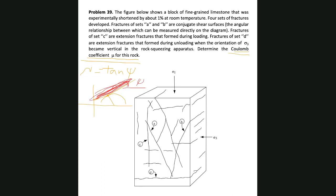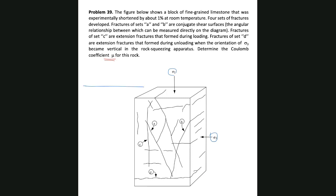By knowing this, I need some information to draw my Mohr circle and come up with the mu. We don't have any value for sigma 1 and sigma 3, but that's okay, because you can draw your Mohr circle anywhere you want with any size you prefer. I'm going to do this and call one end sigma 1 and the other sigma 3.